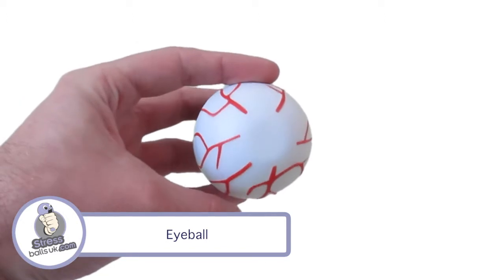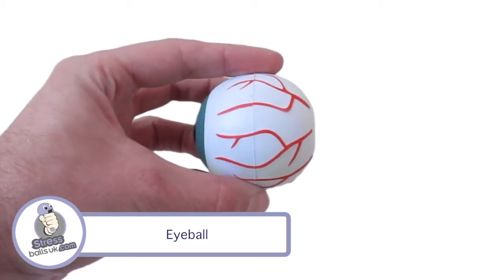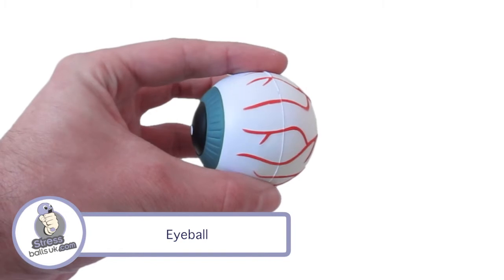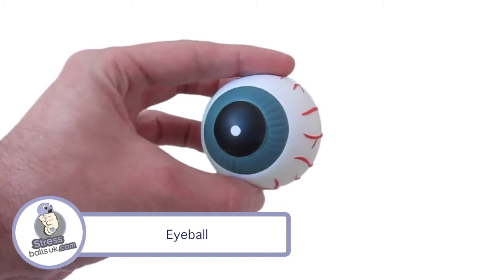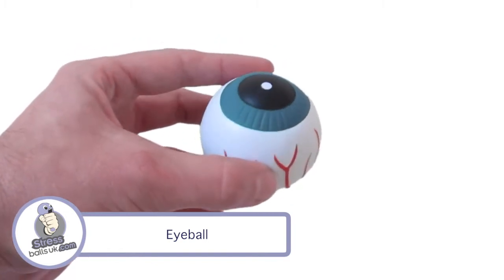One of the more detailed items we have, it features painted veins, iris, and pupil which all come as standard. It has a print area on the back of 20mm and one on the front of 8x15mm.